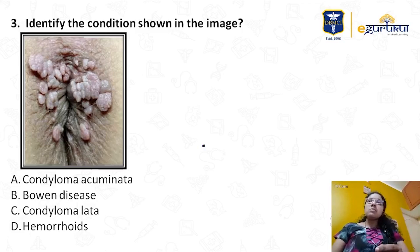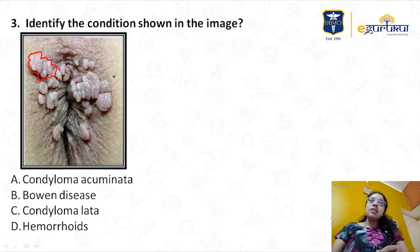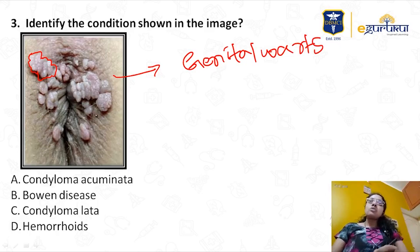Coming to the next question, another image-based question: identify the condition shown in the image. There is an image of genitalia showing multiple verrucous papules over the vaginal fourchette. You can see papules with a verrucous surface over the vagina — this indicates genital warts.